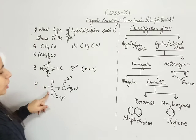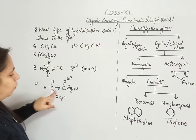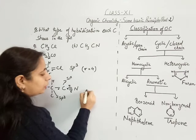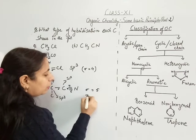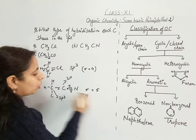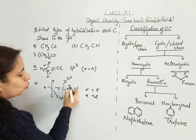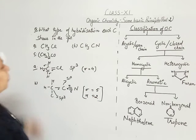In this molecule, how many sigma bonds are there? Counting: 1, 2, 3, 4, and 5. So sigma bonds total 5, and pi bonds total 2. These two are the pi bonds in this case.